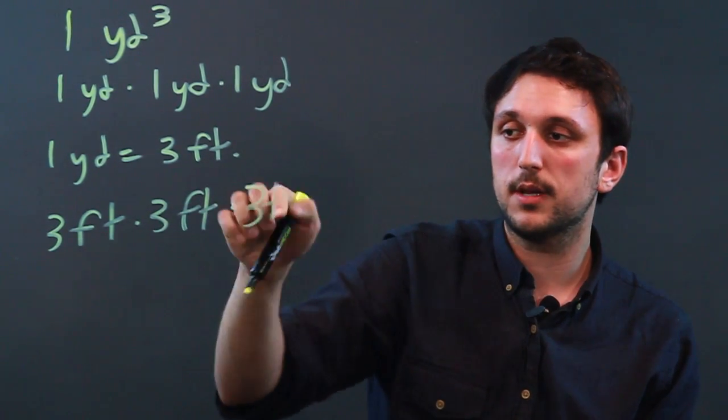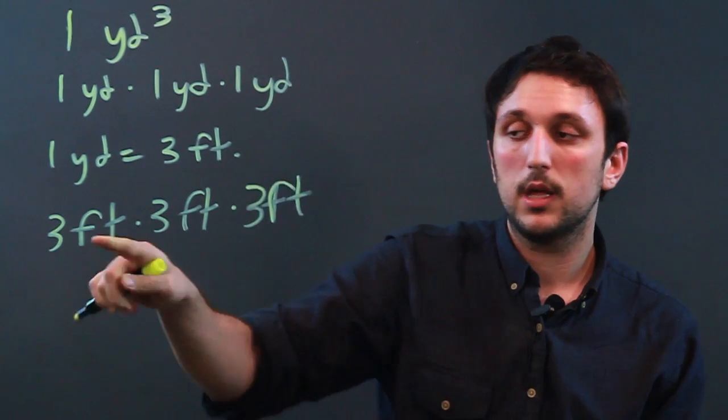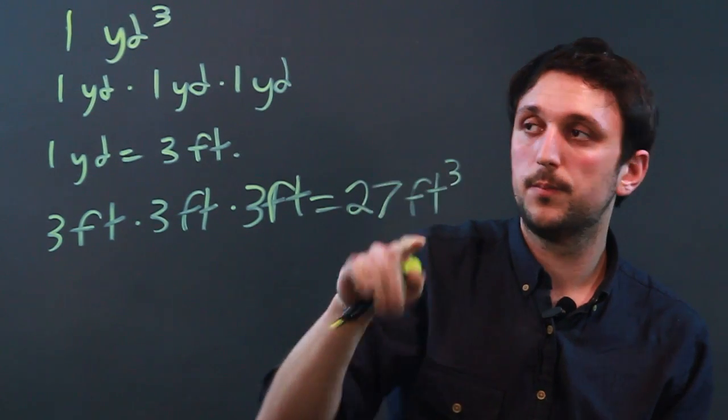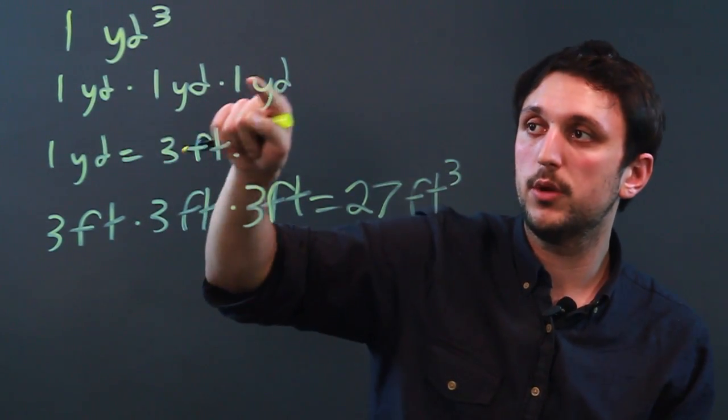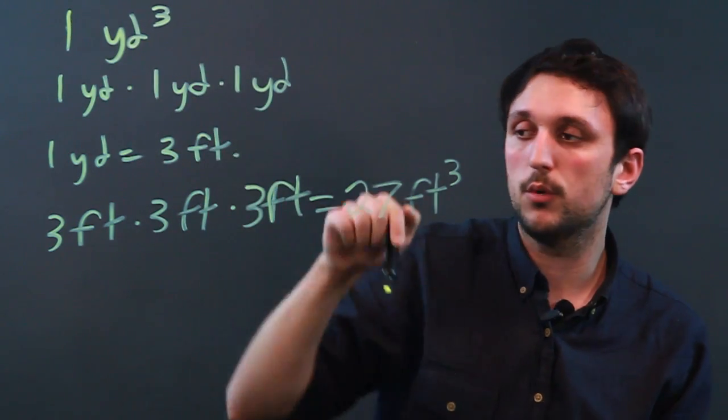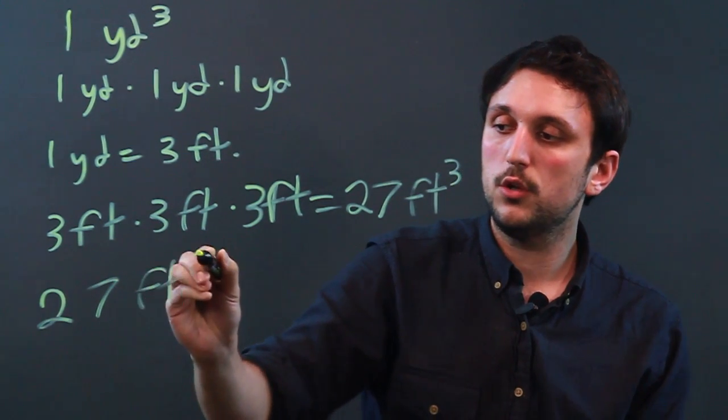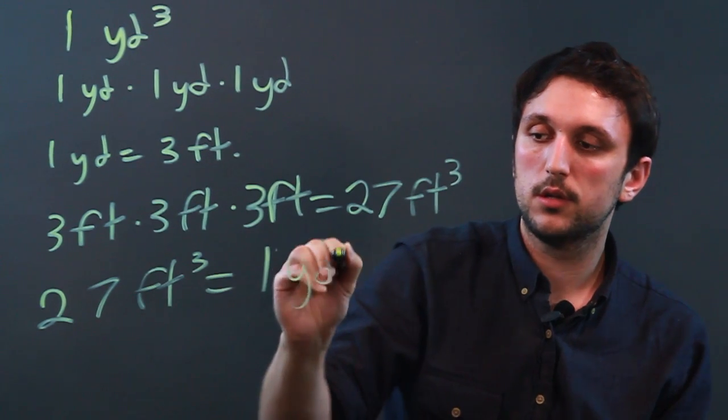And three times three times three equals twenty-seven feet cubed. And up here one yard times one yard times one yard equals one yard cubed. So that means that twenty-seven feet cubed equals one yard cubed.